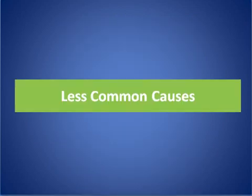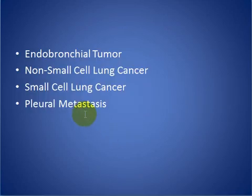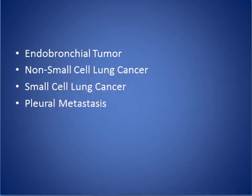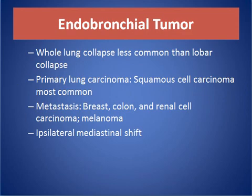Less common causes include endobronchial tumors — small cell tumors, non-small cell tumors, hilar metastasis, and endobronchial tumors. Whole lung collapse is less common than lobar collapse; squamous cell carcinomas are the most common primary cause. Also, metastases — colon metastasis, renal cell metastasis, and melanoma — with contralateral mediastinal shift.